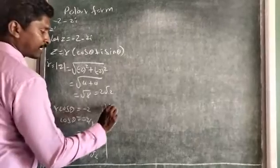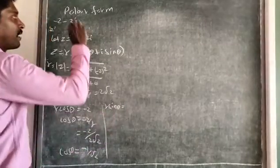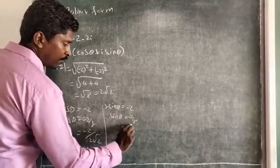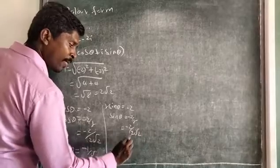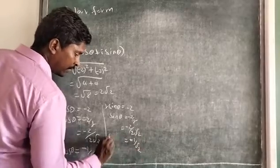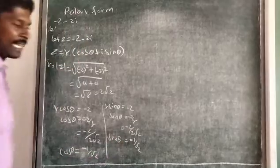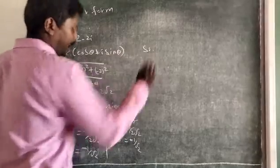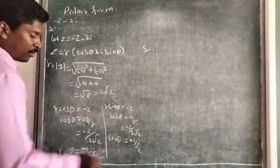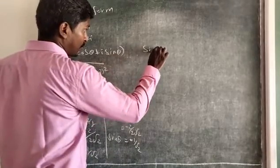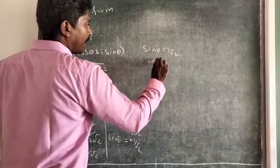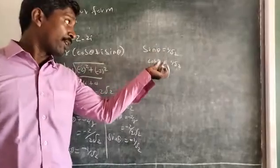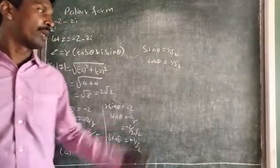Similarly, find the sine term. r sin θ equals the imaginary value, which is minus 2. So sin θ = −2/r = −2/(2√2) = −1/√2. Now you want to select the angle that satisfies both the cos term and the sine term. Without the minus symbol — don't worry about the negative sign — sin θ becomes 1/√2 and cos θ becomes 1/√2. Substituting any angle, it should give 1/√2 for both.